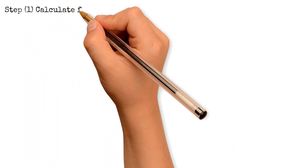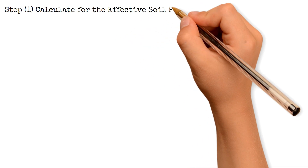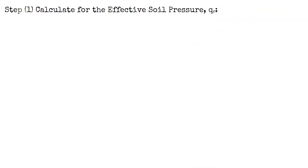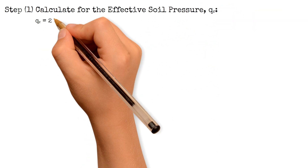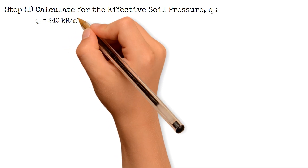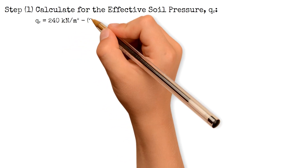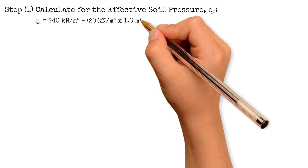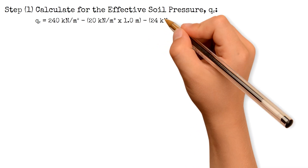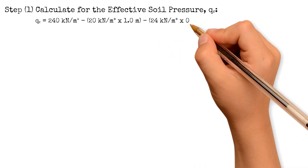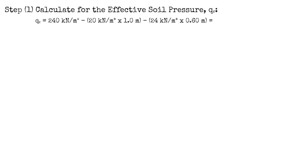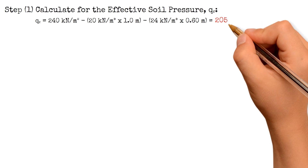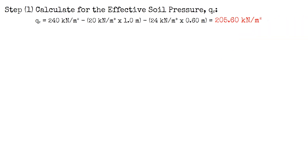The first step is to calculate the effective soil pressure Q_E, which equals the bearing capacity 240 kN per m² minus the weight of soil (20 kN per m³ multiplied by the height of soil 1 m) minus the weight of concrete (24 kN per m³ multiplied by the footing thickness 0.6 m). That gives us a value of 205.6 kN per m².